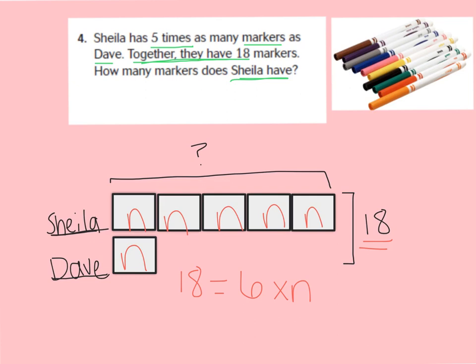Now we can find our missing number. 6 times something gives me 18. That's right — 6 times 3 gives me 18. So N equals 3. Now we can change all the Ns to 3s.